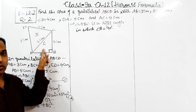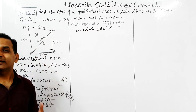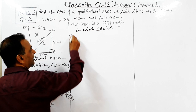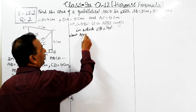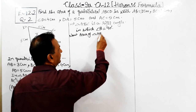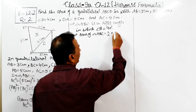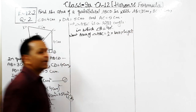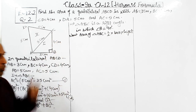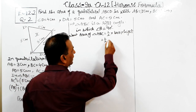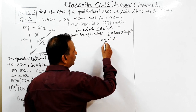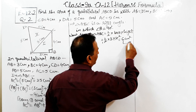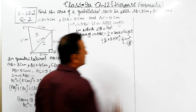Since we have proved it is a right-angle triangle, its area can be obtained using the formula: 1 by 2 into base into height. So area of triangle ABC equals 1 by 2 into 3 into 4, which equals 6 centimeter square. This is result number 3.